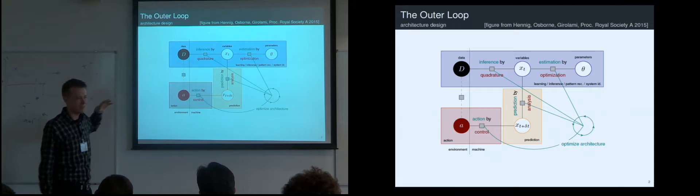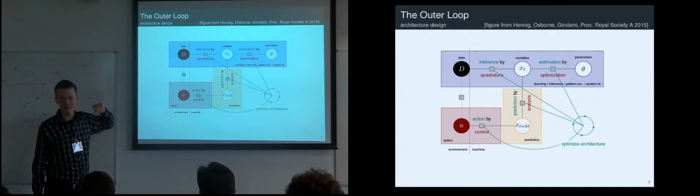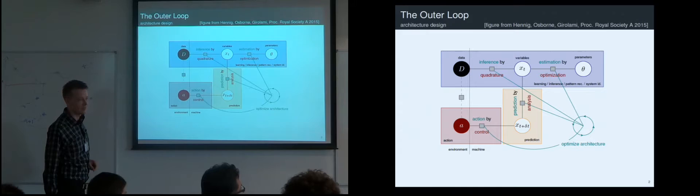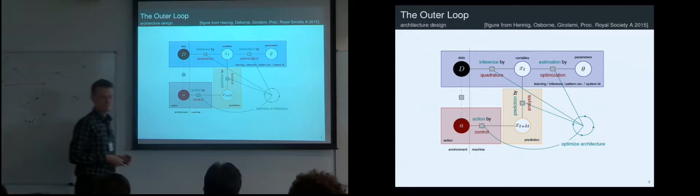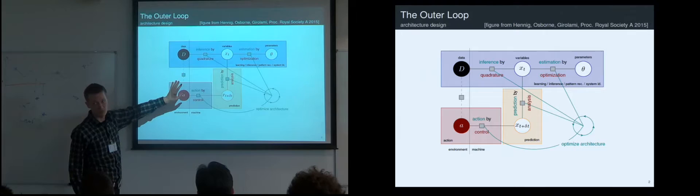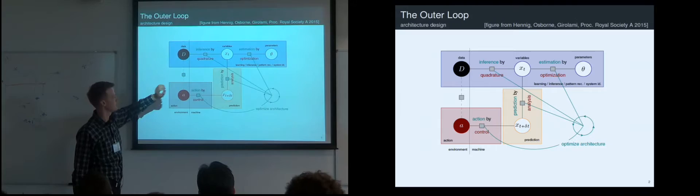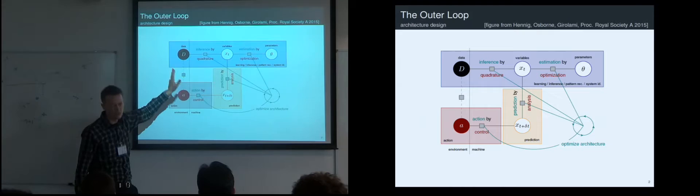The area that Bayesian optimization is currently making money in is making these algorithms better by changing the high-level structure — the architecture of these algorithms. Regarding reward: it's a function that's part of this computation, like a loss function. The point of this picture is to say the kinds of computations we're performing are optimization, integration, solving differential equations, and control. This includes everything in linear algebra, because linear algebra can be used to do all of these tasks.